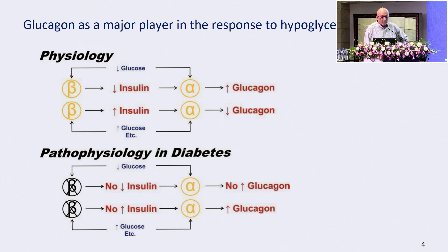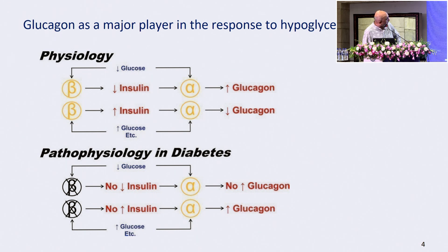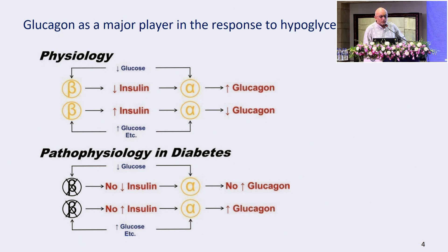Remember, in physiology, this is the basic stuff — the relationship between the beta cell. A decrease in glucose leads to a decrease in insulin. The alpha cell shows an increase in glucagon. Similarly, an increase in insulin leads to a decrease in glucagon.